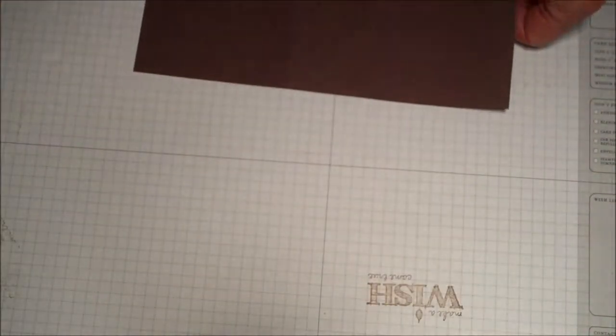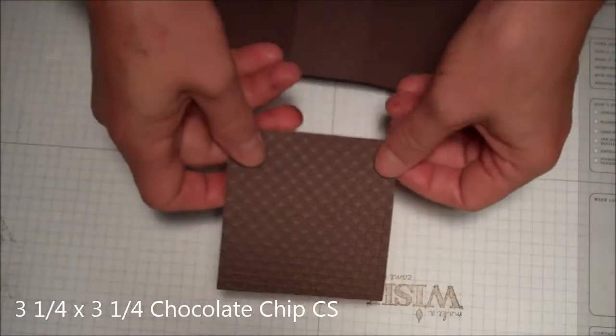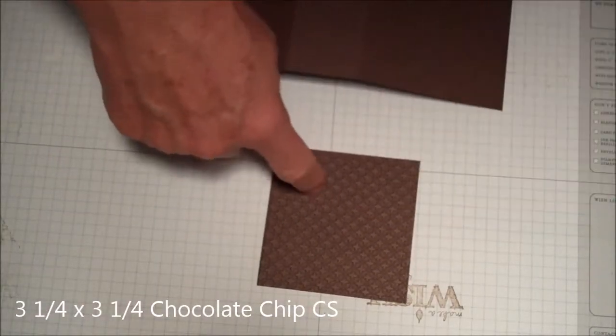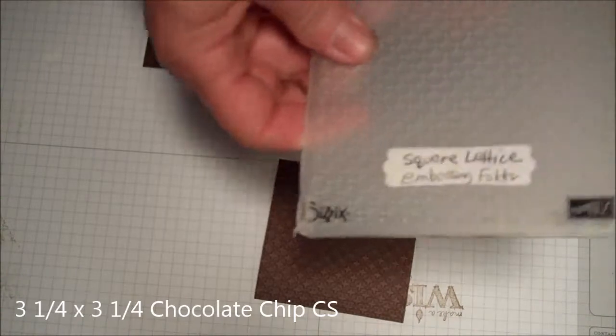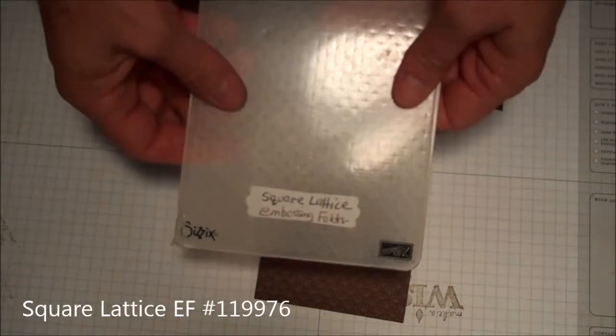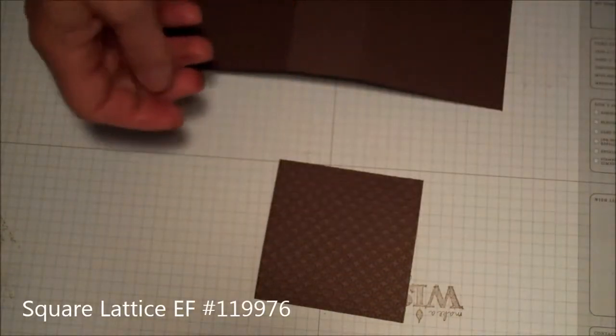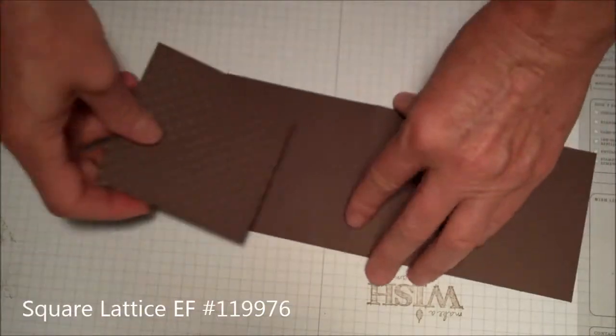Then I put a 3.25 by 3.25 inch piece of chocolate chip and ran it through the Big Shot using the square lattice embossing folder, and we'll glue it right on there.